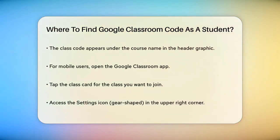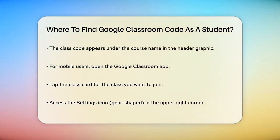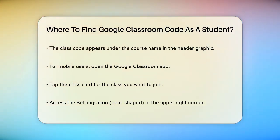If you're using the Google Classroom app on your mobile device, here's what you do. Open the app, tap the class card for the class you want to join, and then tap the gear shape settings icon in the upper right corner. Scroll down to the general section and you'll find the class code listed there.